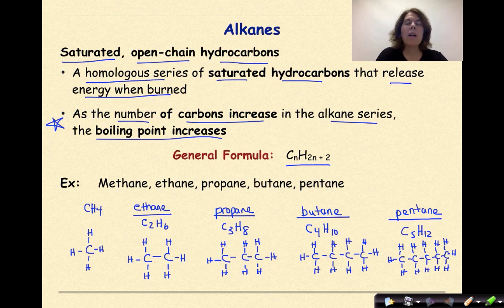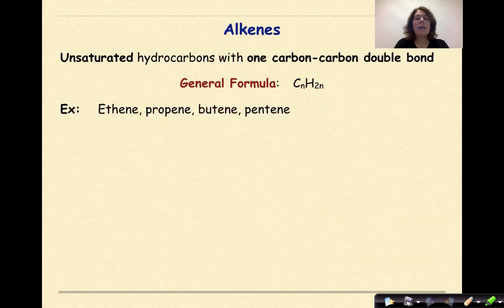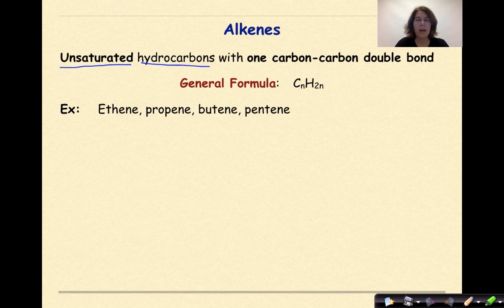So there you have it — the alkanes, where you have carbons with single bonds between them, surrounded by hydrogens. Now let's talk about alkenes. These are unsaturated hydrocarbons — unsaturated meaning a double or triple bond — specifically with one carbon-to-carbon double bond. That -ENE ending tells you there's a double bond somewhere. The general formula here is CnH2n.